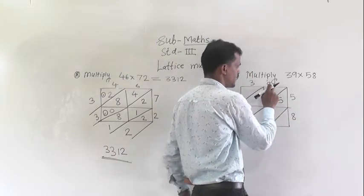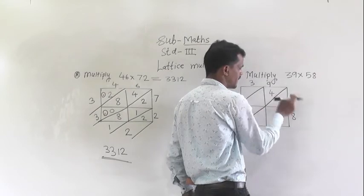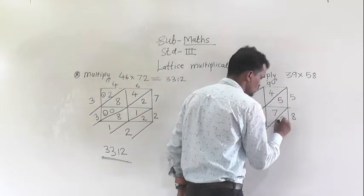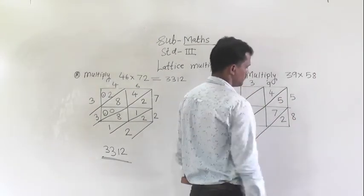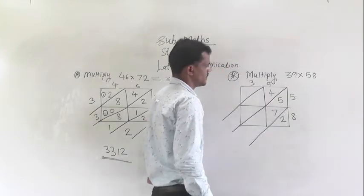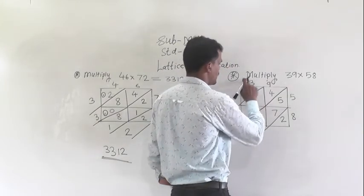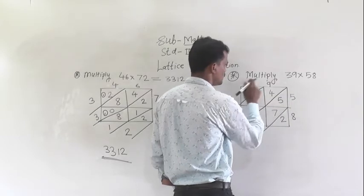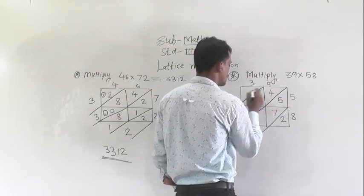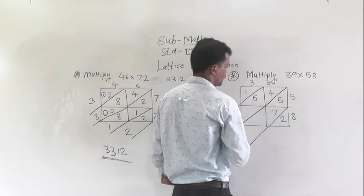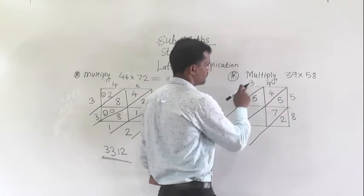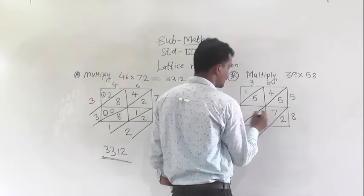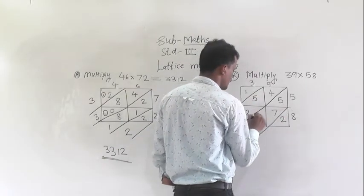Then this 9 multiply by 8 — 9 eights are 72, write here 72 like this. Then next step multiply this 3 by 5 — 3 fives are 15. Then multiply this 3 by 8 — 3 eights are 24.